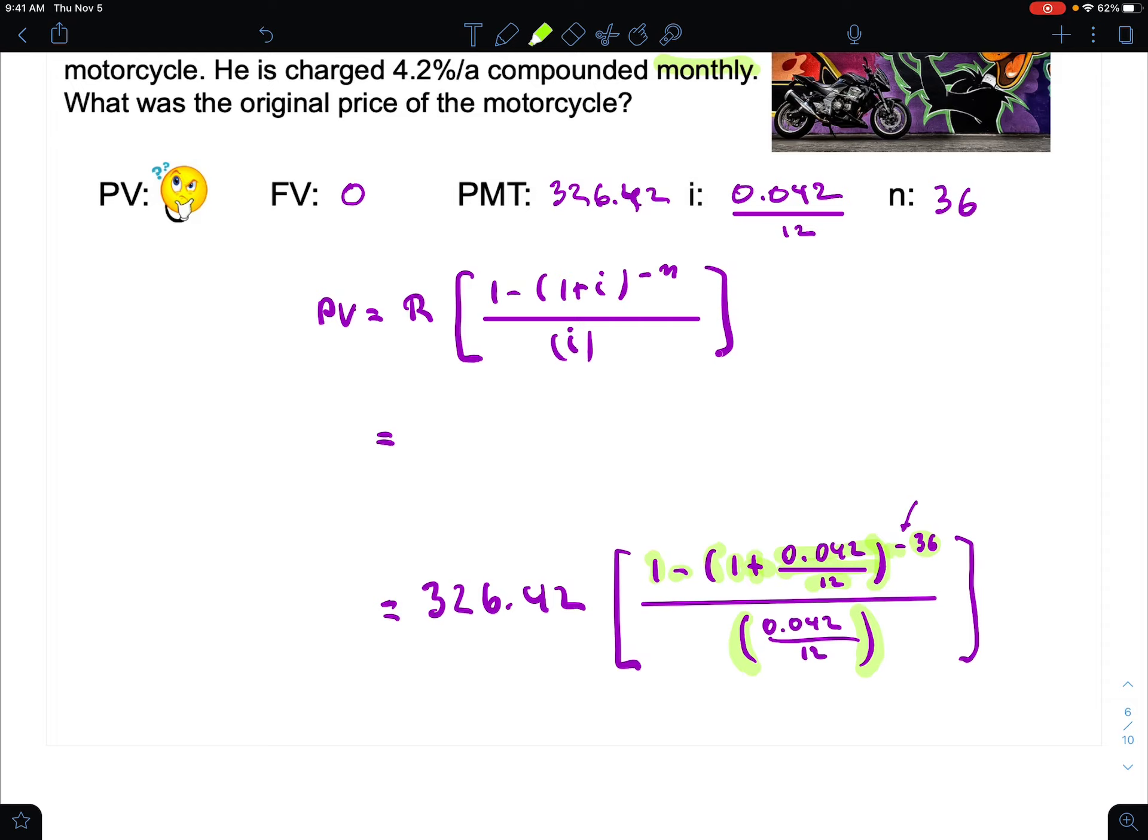I would press enter to get an answer for the whole thing. Then I would say divided by, open bracket, 0.042 divided by 12, hit enter. Now I have a number for the full bracket—I don't know what that is, I don't care, it's on the calculator. And finally I say, now multiply it by 326.42 to give us an answer of $11,022.85.